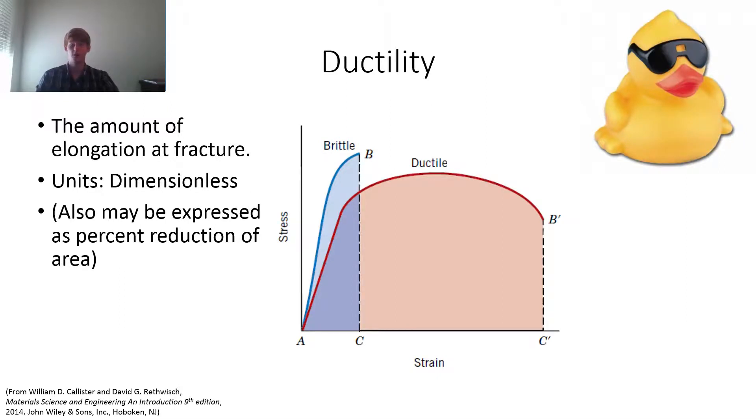So ductility. Ductility is the amount of elongation at fracture. So this is a really easy property to read off a stress-strain diagram or stress-strain graph. You find the fracture point, which is at the very end of the curve, and you just read straight down, and it's the strain. It's dimensionless, so the farther out it is on a graph, the more ductile it is, and the shorter it is, the less strain it has, the less ductile it is, and it's brittle. And these are relative terms. Ductility may also be explained as percent reduction in area. We're not going to talk about it, but just know that there's multiple ways to calculate ductility.